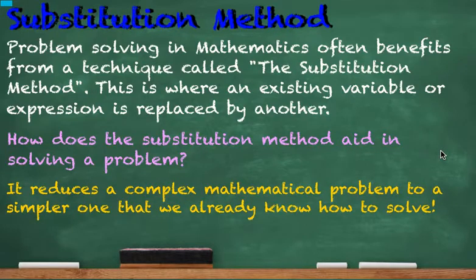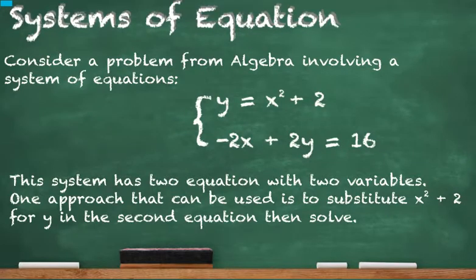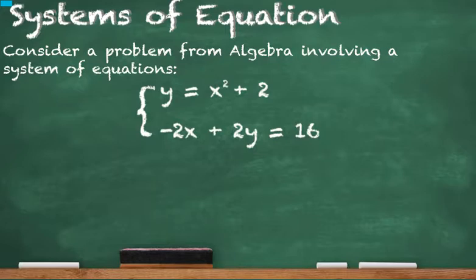In our first example, systems of equations, we have here an example where there are two equations. Each equation has two variables, and we say we don't know how to solve two equations with two variables. We know how to solve one equation with one variable. So what we do in an algebra 1 course is we say anywhere we see y, since it is equal to x squared plus 2, we can replace that y with x squared plus 2, and when we do this it changes it from an equation with two variables to an equation with one variable, which is what we know how to solve. So let's rewrite the second equation. This would then become negative 2x plus 2, now we're replacing the y with x squared plus 2, equals 16. So this is the substitution step.